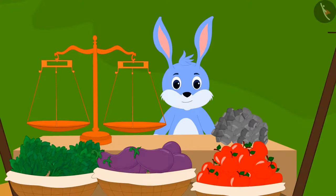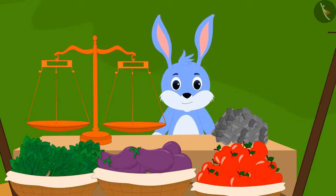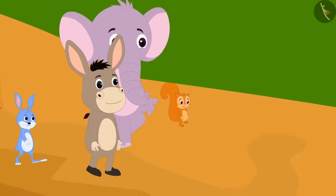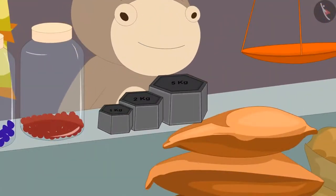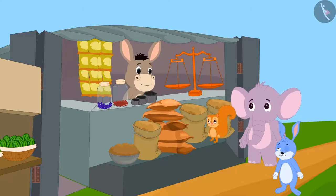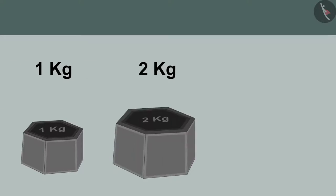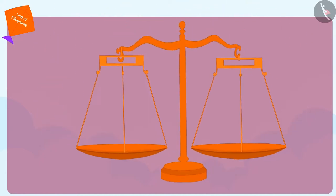Banni said to Bhoala, 'I understand that kilogram is a unit of weight measurement, but how can we use it to measure the weight of objects?' Bhoala, along with Banni, Appu and Chanda, reached his shop. There he showed them weights for such use. 'Look at this — we can measure the weight of objects in kilos using this kind of weight. This weight is 1 kg. This is 2 kgs. And this is 5 kgs.'